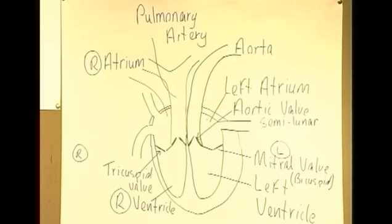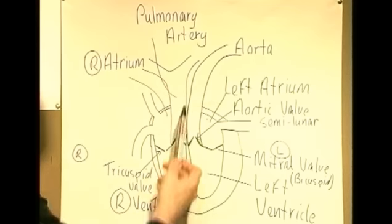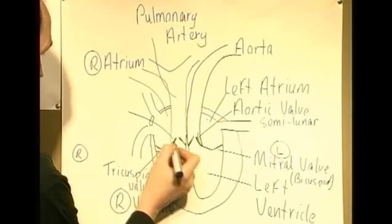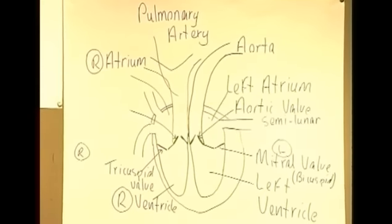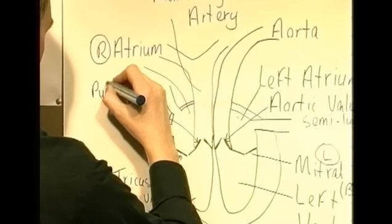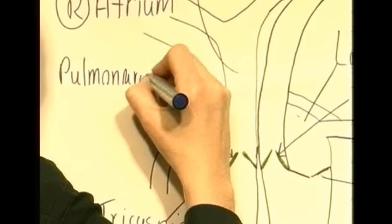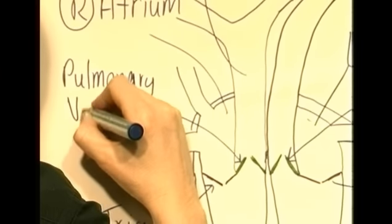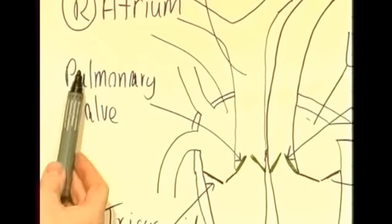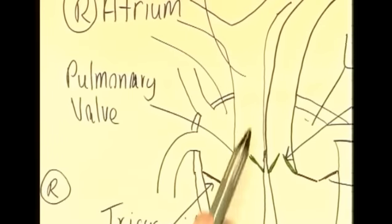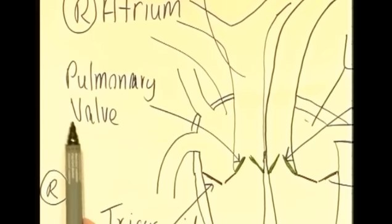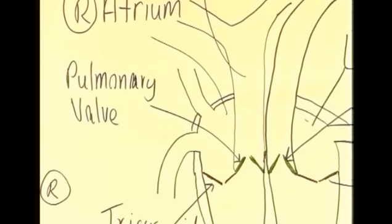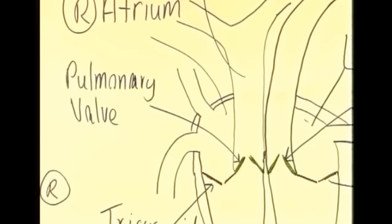Notice again there is a valve between the right ventricle and the pulmonary artery. Because it guards the entrance to the pulmonary artery, it is called the pulmonary valve. In some older books you might find it referred to as the pulmonary arterial semilunar valve, but the correct name is the pulmonary valve.